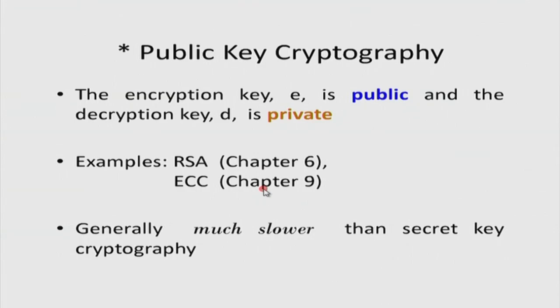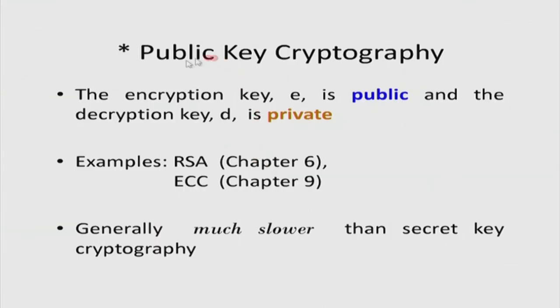A sensible question is: what is the advantage of one over the other? In secret key cryptography, every person must maintain n secrets — one per entity they wish to communicate with — creating a key management problem. In public key cryptography, you only need your public-private key pair, and you only need to maintain the private key very safely. However, public key cryptography is much slower — perhaps about a thousand times slower than secret key cryptography. So the obvious question is: can we combine public key and secret key cryptography to get the advantages of both?